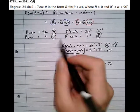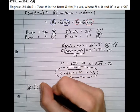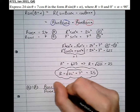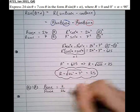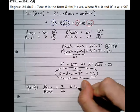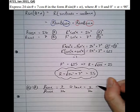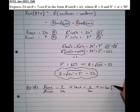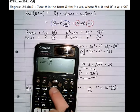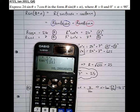Moving on to finding alpha. If we do equation B divided by equation A, on the left-hand side we get R sine alpha over R cos alpha, and on the right-hand side we get 7 over 24. The R's cancel, and sine alpha over cos alpha is tan alpha. Therefore, alpha equals the inverse tan of 7 over 24, which equals 16.3 degrees to three significant figures.